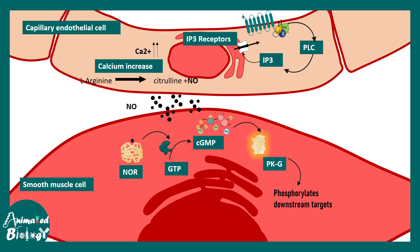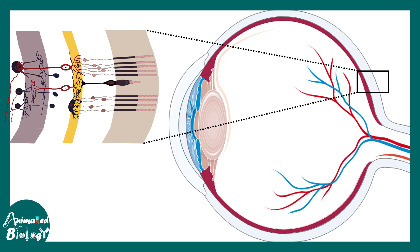Protein kinase G, being a kinase, can phosphorylate several downstream targets. Many of these targets are components of cross-bridge formation between actin and myosin. Protein kinase G and cyclic GMP regulate this cross-bridge formation by preventing it, thereby relaxing the smooth muscle.